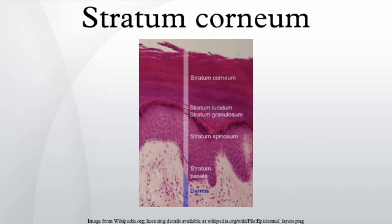The stratum corneum protects the internal structures of the body from external injury and bacterial invasion. An inability to correctly maintain the skin barrier function due to dysregulation of epidermal components can lead to skin disorders. For example, a failure to modulate the activity of kallikreins via the disruption of the protease inhibitor LEKTI causes the debilitating disorder Netherton syndrome.